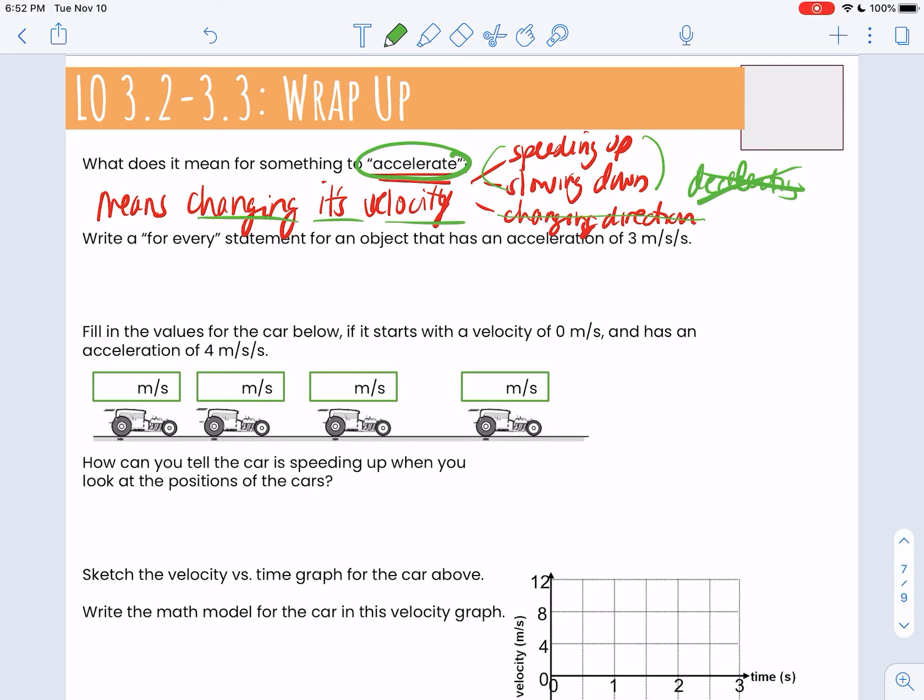In this case, it's speeding up. If something has an acceleration of 3 meters per second per second, that means for every 1 second, the velocity increases, right, because it's a positive 3, by 3 meters per second. Every second that passes, the object gets 3 meters per second faster than it was before.